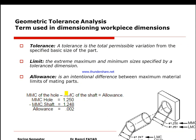Limits are the extreme maximum and minimum sizes specified by a tolerance dimension — the maximum and minimum sizes specified as plus or minus an amount. The value in the middle is the basic size. Allowance refers to the mating of two components, such as a shaft and hole, and how much clearance exists between them.